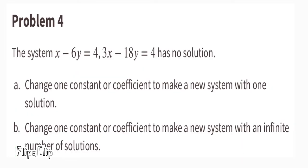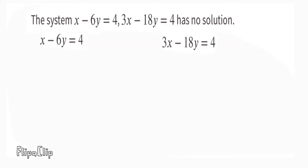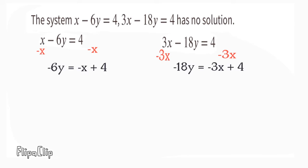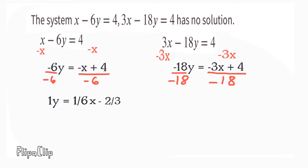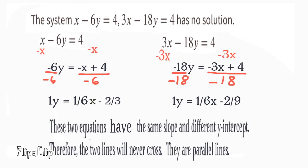Problem number 4. The system x minus 6y equals 4 and 3x minus 18y equals 4 has no solution. I'd like to rewrite these equations in slope-intercept form. After subtracting x from both sides on the left equation and subtracting 3x from both sides on the right, then dividing by negative 6 and negative 18 respectively, we can see they have the same slope and different y-intercepts — therefore the two lines are parallel and will never cross.